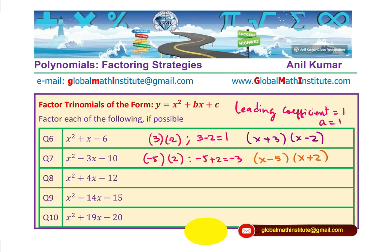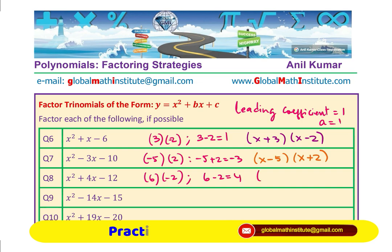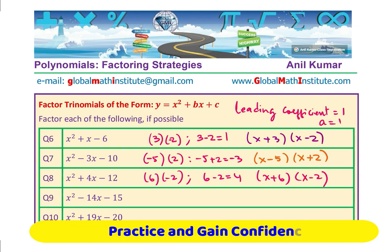Minus 12, I hope you got this 6 and 2, 6 being positive, 2 being negative. When you add them, you get plus 4, which you need. x plus 6 times x minus 2 is my answer.